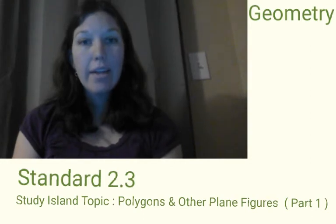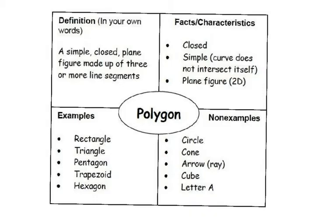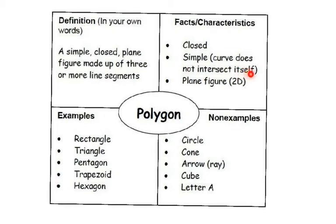Let's go ahead and look at our lesson. First, let's define what a polygon is. A polygon is a simple closed plane figure made up of three or more line segments — so straight sides — and it's closed. Characteristics: it's a simple curve that does not intersect itself, so the sides don't cross each other, and it's 2D.